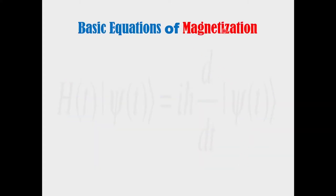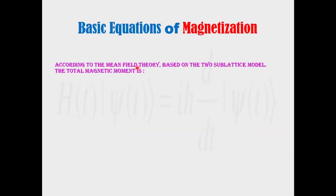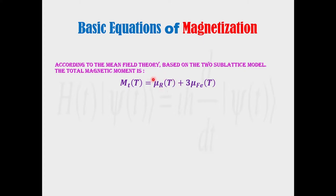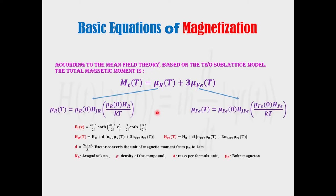Basic equation of magnetization. According to mean field theory, based on the two sub-lattice model, the total magnetic moment is given by this equation, where we add the magnetic moment from the rare earth sub-lattice to three times the magnetic effect of the iron sub-lattice. Both depend on the Brillouin function as given by these two equations.